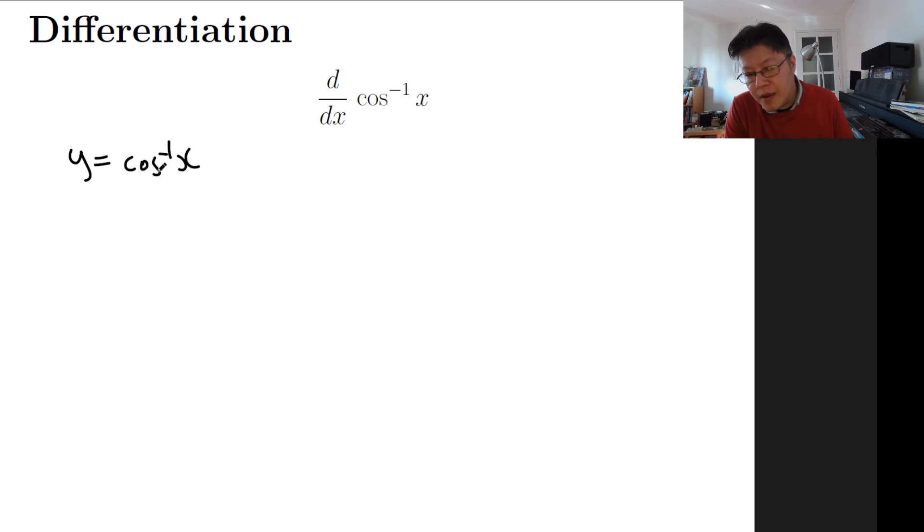This will allow us to undo the inverse, so we can take cos of both sides and get cos y equals x. Now we no longer have a cos inverse, just a cos, and we can differentiate both sides implicitly.